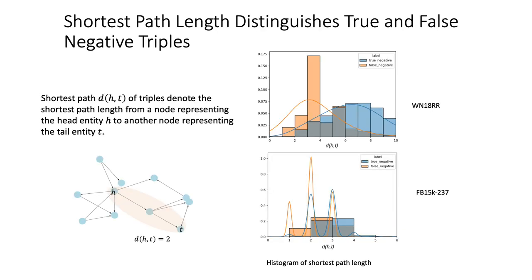By investigating the graph topology structure, we notice that the false negatives and true negatives show different distributions in terms of the shortest path between the head entity and tail entity.